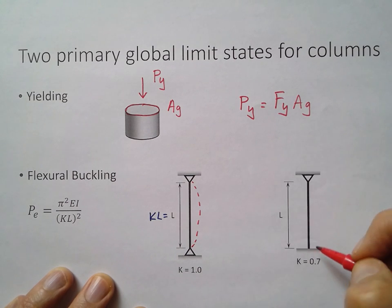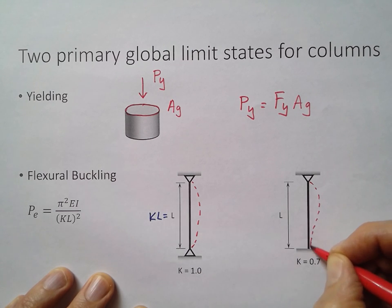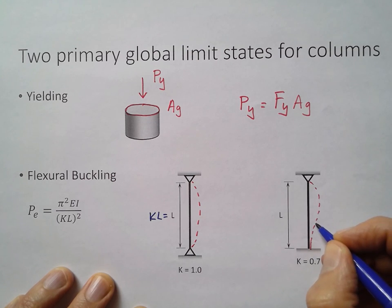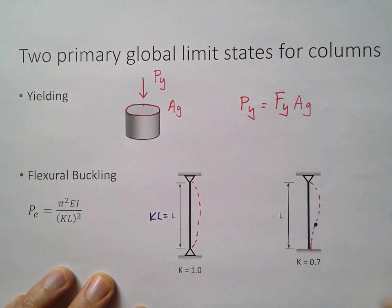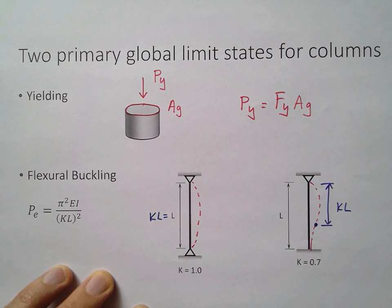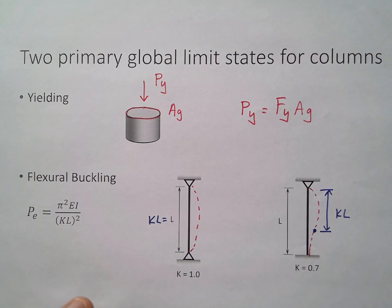It is different for different end conditions. In this case, I have a column that's fixed at the bottom and pinned at the top. So when it buckles, it comes out like this, but then it has to curve back because it has to go straight down at the bottom. In this case, you can see K is not equal to 1, and you can see it also with the deflected shape. There's an inflection point somewhere right around there, the curvature changes. That's the distance of the half sine curve right there. This distance here is KL, and it's about 70% of the total length.